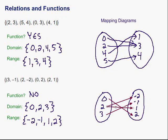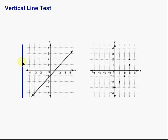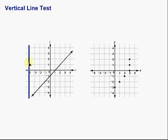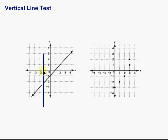Now the vertical line test, which I mentioned earlier, we can use to determine whether a relation is a function. Here are a couple of examples of graphs. The vertical line test says that if a vertical line passing over the graph touches the graph no more than once, then that is a function. In this case, as I take my vertical line across the graph, it's just touching once each time — touching once, once, once. So this first one, yes, that is a function.